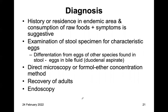Diagnosis: history of residence in endemic areas and consumption of raw food. Symptoms are usually suggestive. Examination of stool specimen shows characteristic eggs. Differentiation of eggs from other species found in stool is important. You can also get eggs using a duodenal aspirate — using endoscopy or aspiration, obtaining bile fluid for examination. You could do direct microscopy or the formalin-ether concentration method. Recovery of adult worms is also possible, as well as endoscopy.